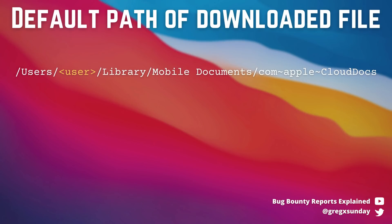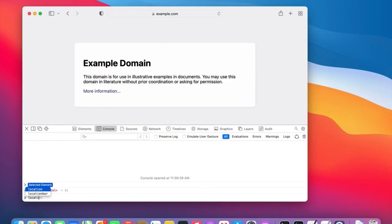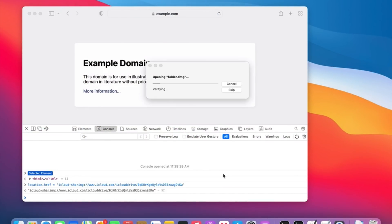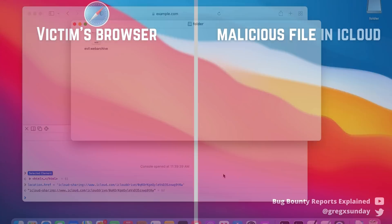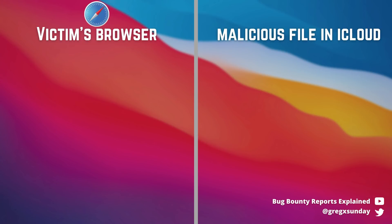One last piece of the puzzle is the path of the downloaded web archive file. Normally it will be inside the user directory, so we'd need to know the macOS username — okay when targeting a specific victim, but hard to predict at scale. To solve this, you can use a DMG file, a disk image format that contains an archive with other files inside. It's mounted into the Volumes directory, which means we don't need to know the username to predict its location. So, what is it finally — a web archive, a DMG, a URL file? Let's go through the whole exploit.